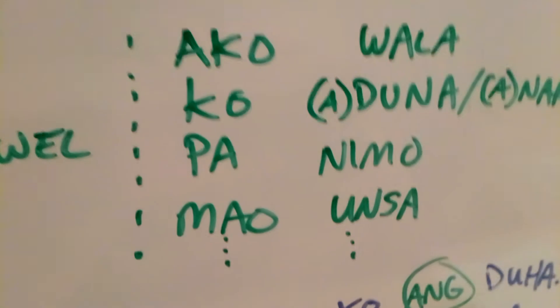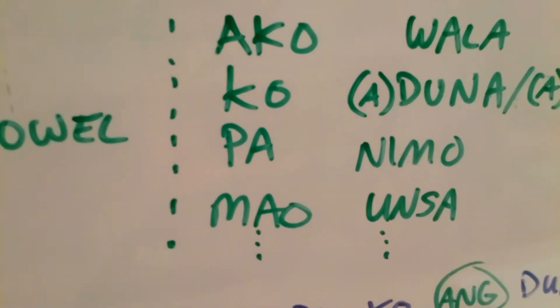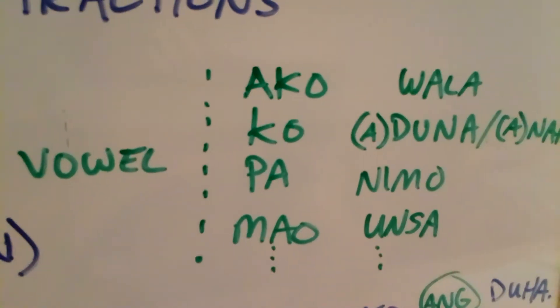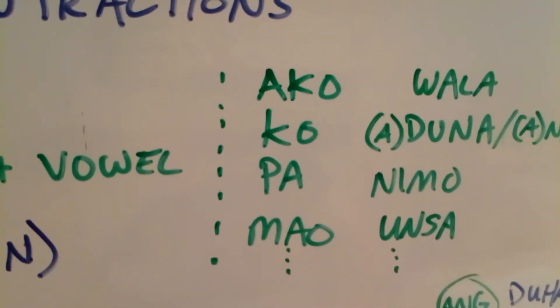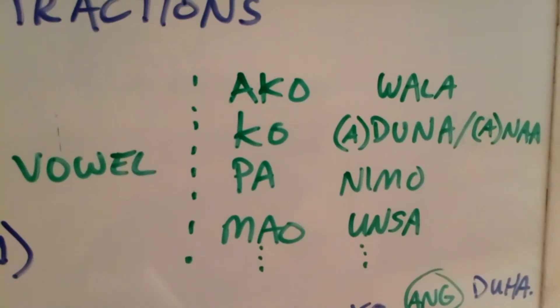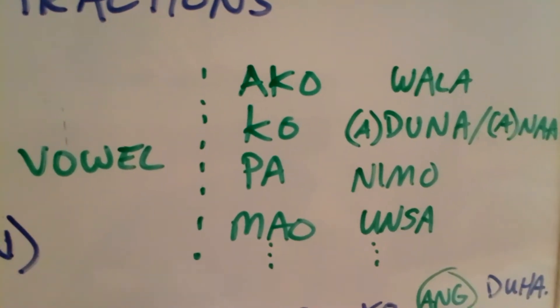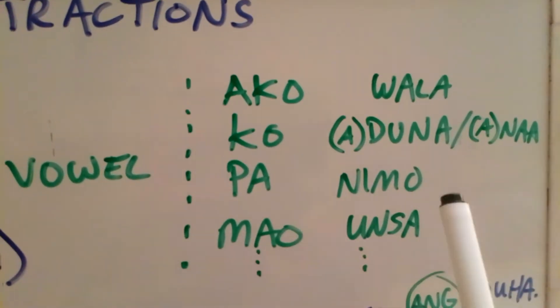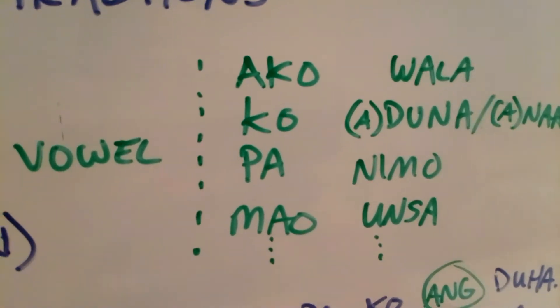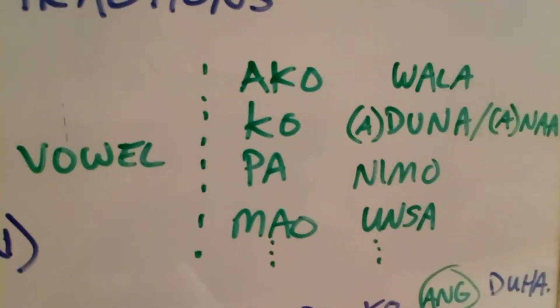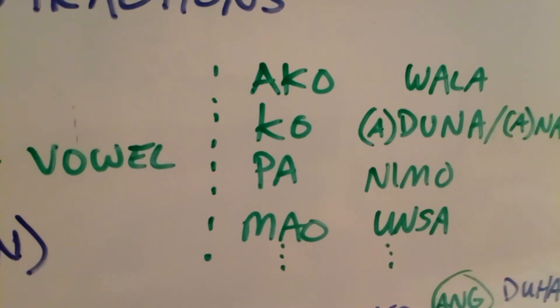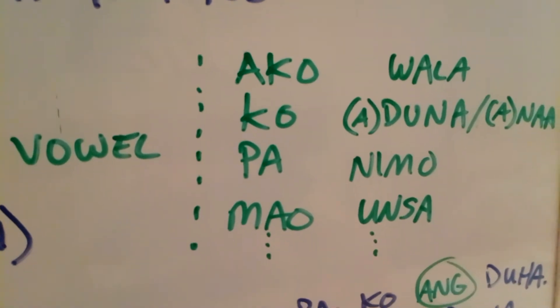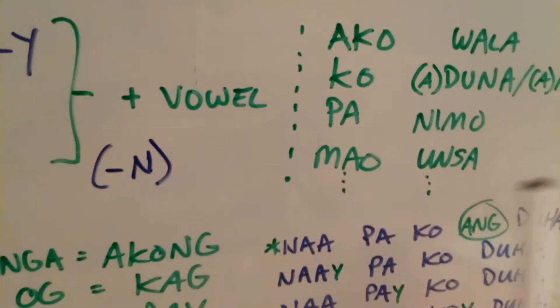So here are some example words. It's not an exhaustive list, but it's just a list of common words that you can use for contractions. And I put the ellipses to indicate that there are more than just these words: ako, ko, pa, mao, and so on. Wala, aduna, naa, anaa, nimo, unsa, whatever. The list just goes on and on. But this isn't a complete exhaustive list. When you continue your journey in learning more about the language, you'll find out other words that you can contract.